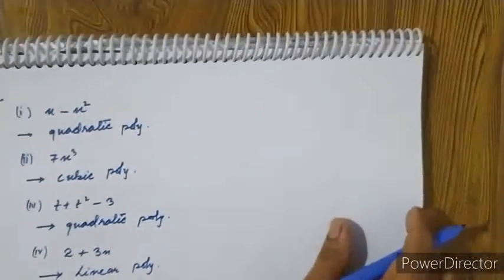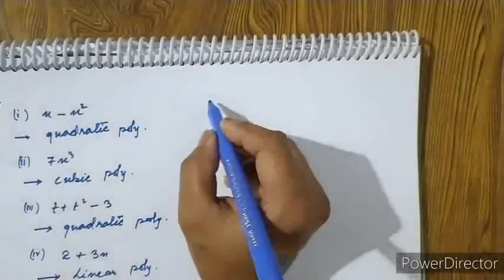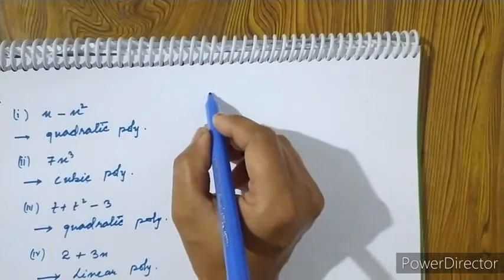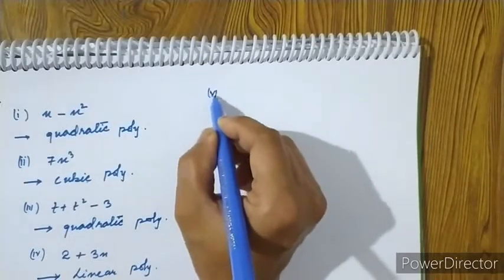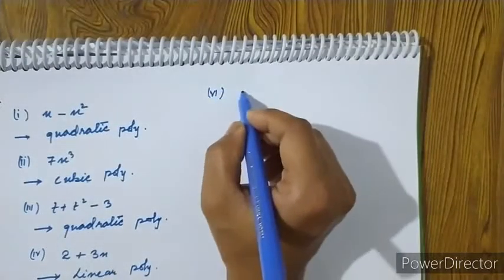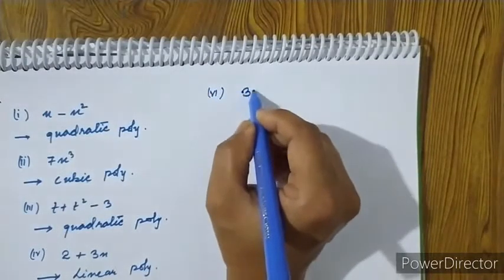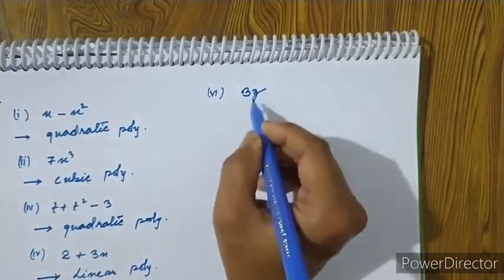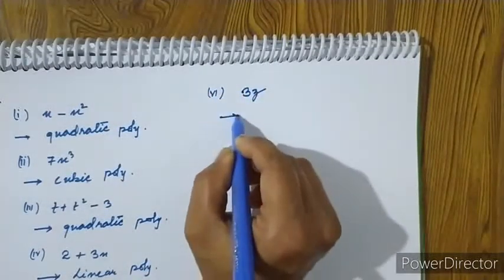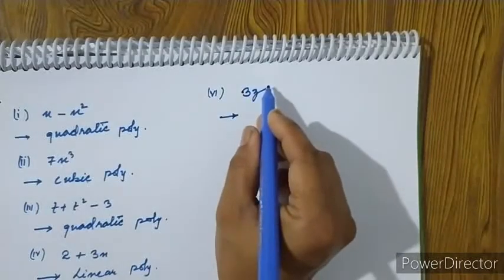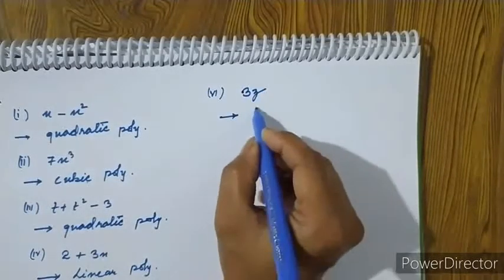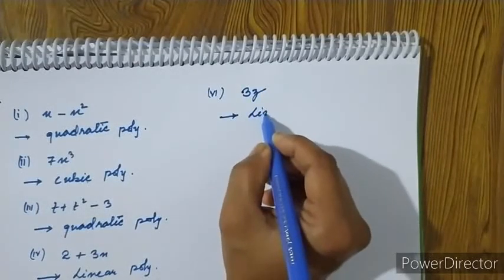Roman numeral 6: 3z. The degree is 1, so this is a linear polynomial.